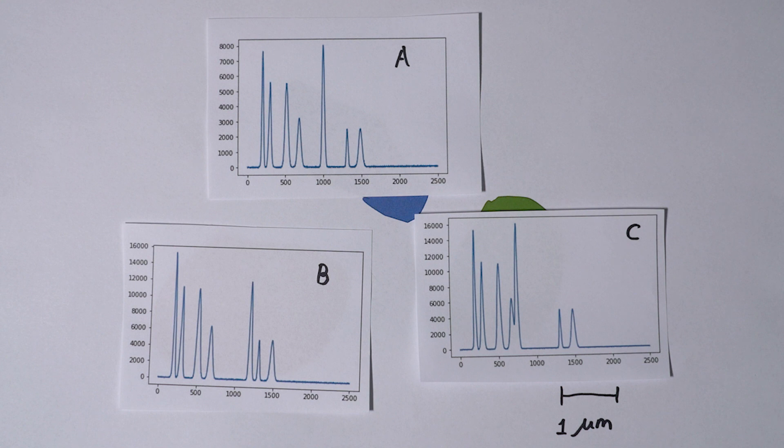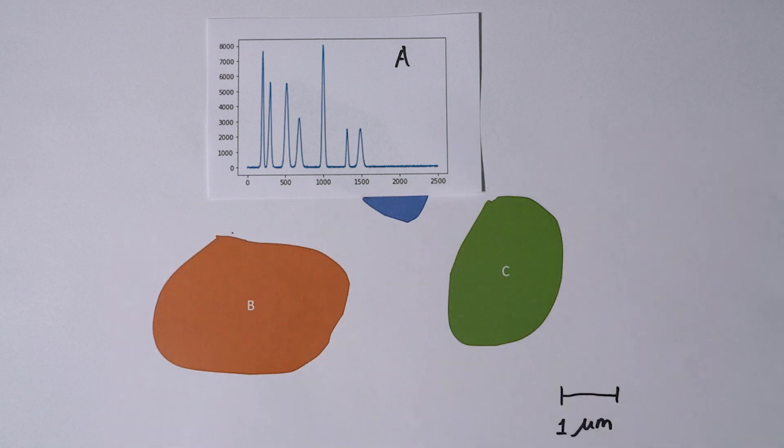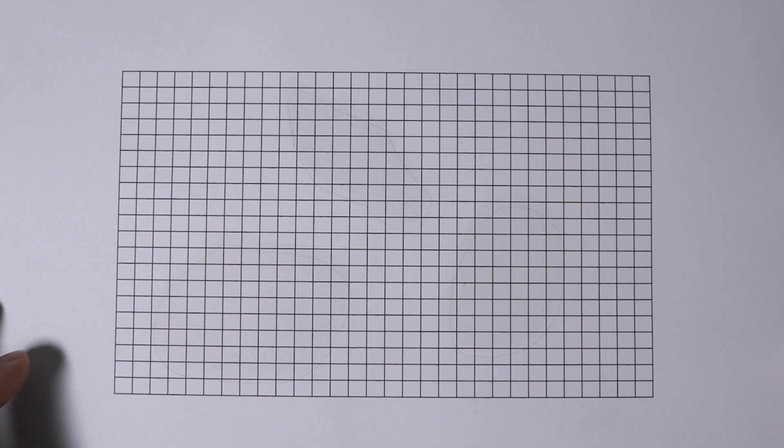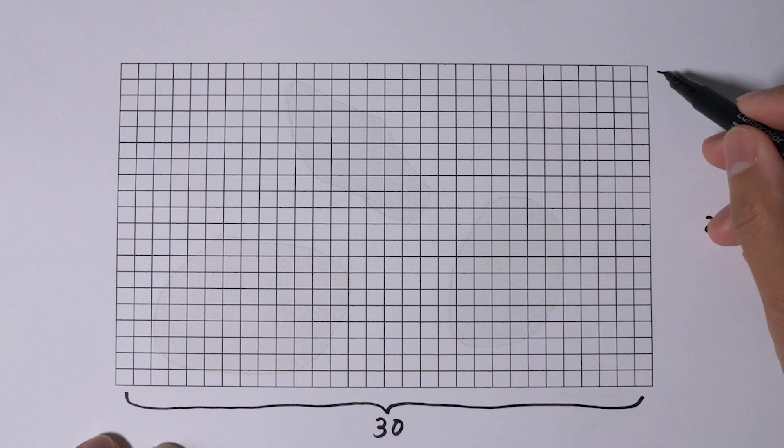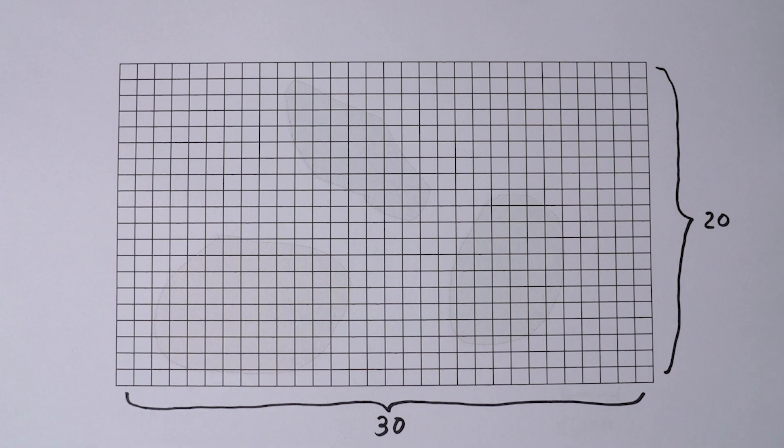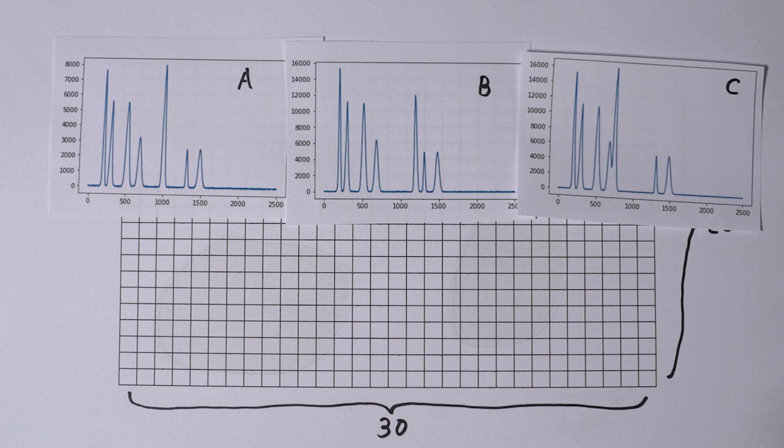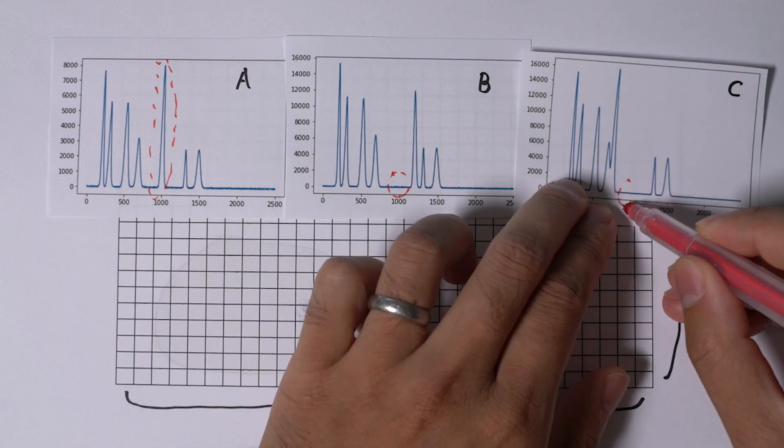Basically, we use FTIR, Raman or IR laser microscope to record spectrum in a certain amount of measurement points. As the device takes spectrum from each of the points, let's say 30 by 20 points, there are 600 spectra. In the end, we need to abstract information from these spectra and make an image out of it. The most common way of generating chemical images is using characteristic peaks in the spectra.